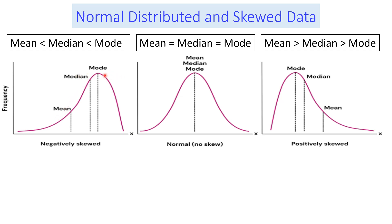It is obvious that the mode is found at the peak because that is where the most frequent data lies. In the case of normally distributed data, the mean, median, and mode are equal. In the case of right-skewed or positively skewed data, the mean is affected by extreme values on the right side, so the mean is greater than the median, and the median is greater than the mode.